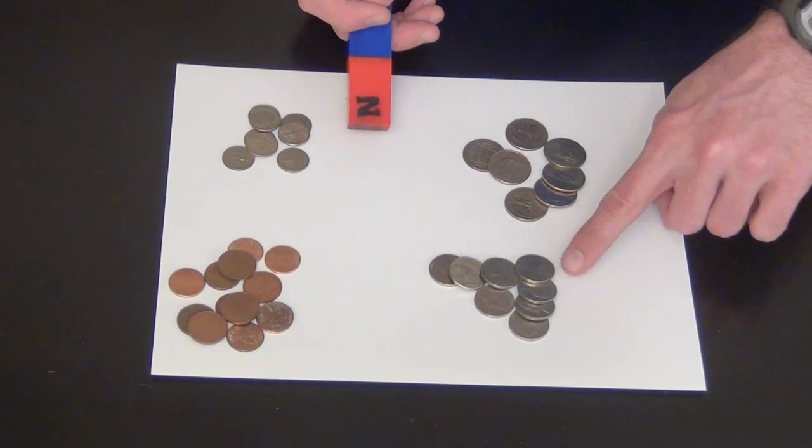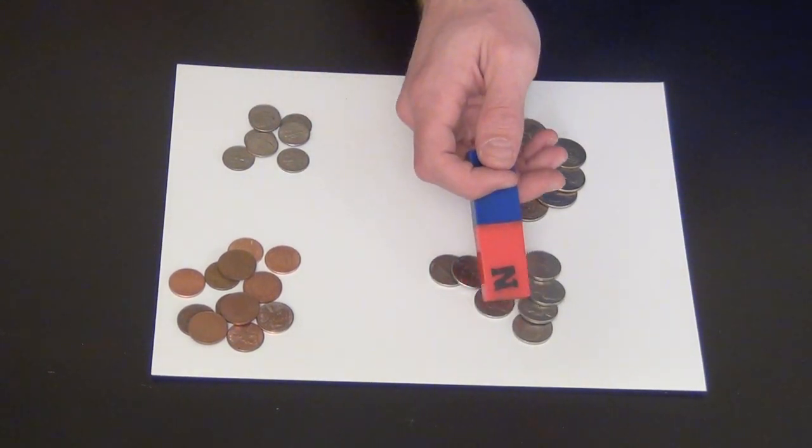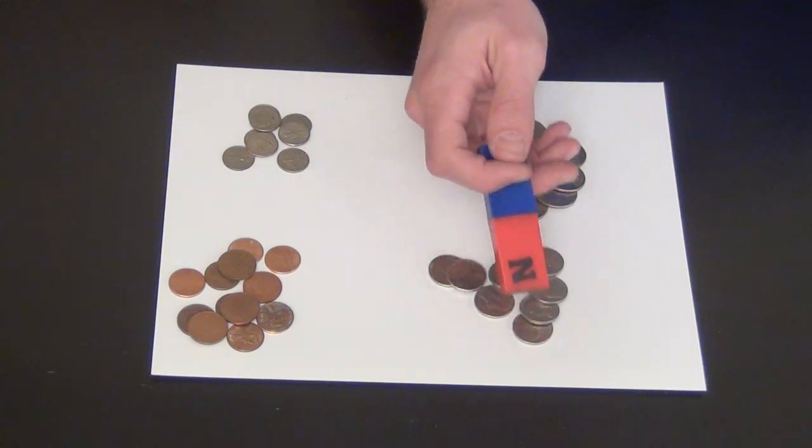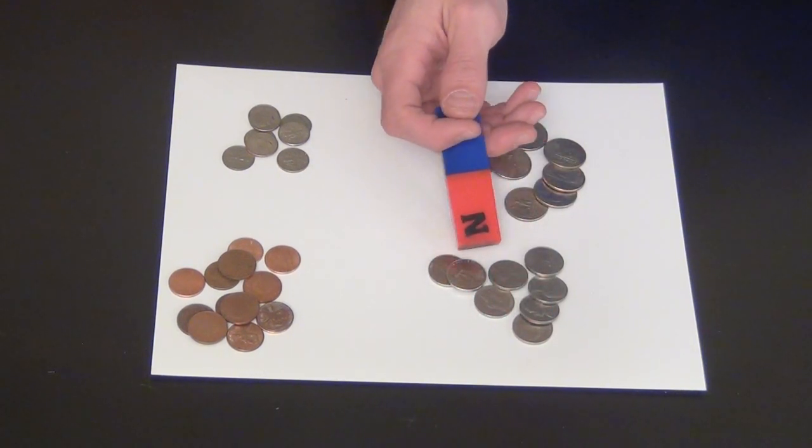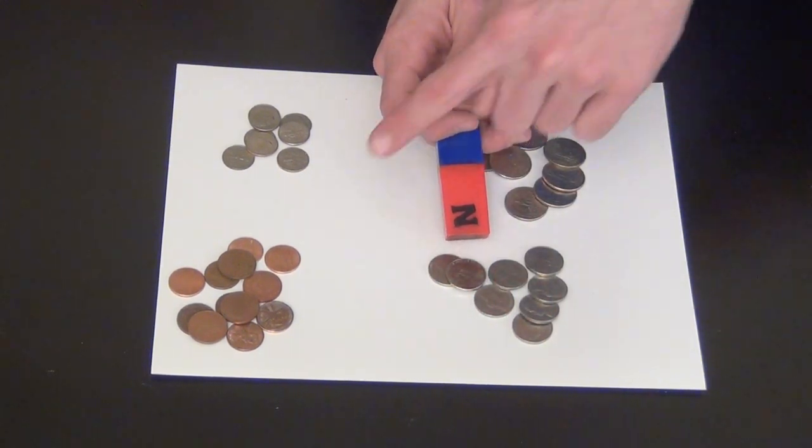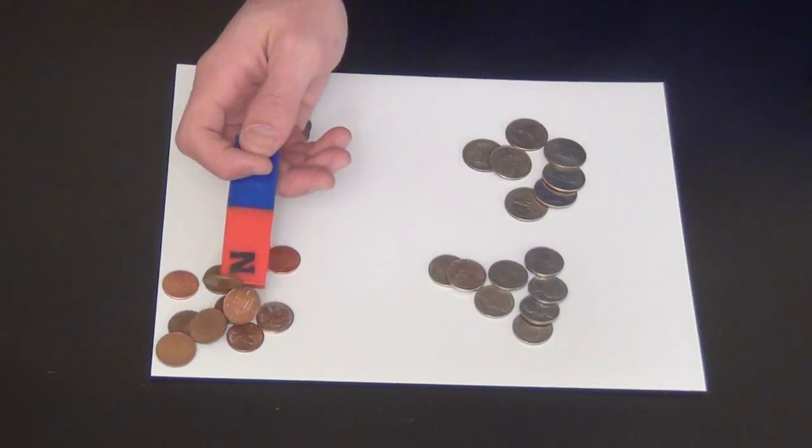Now, nickels. Are nickels made of nickel? Well, they do have a little bit of nickel in them, but not very much, and it is not attracted to the magnet. And pennies are made of copper and zinc, so they shouldn't be attracted. What the? That's not supposed to happen.